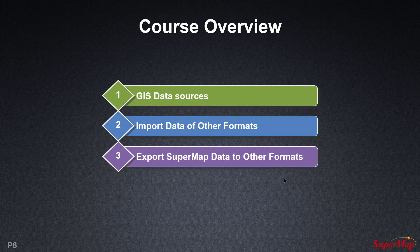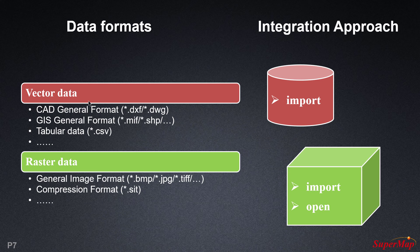We will now talk about and demonstrate how and what types of data can be imported into iDesktop. These are the two types: vector data and raster data, with popular formats shown below each. For vector data the integration approach must be import, and for raster data it can either be import or open. The reason we do not use the open integration approach for vector data is because it doesn't allow manipulation of files since they are opened as read only.